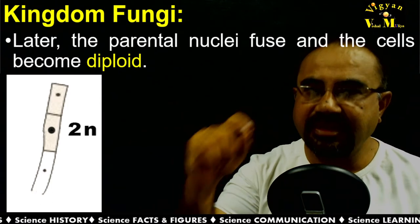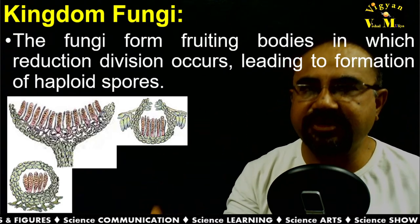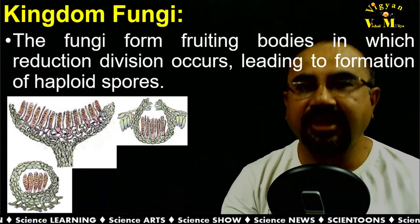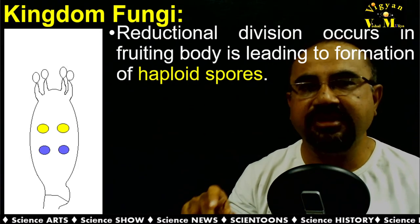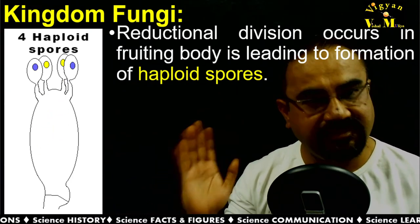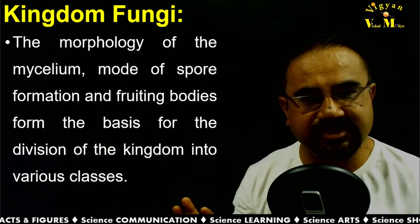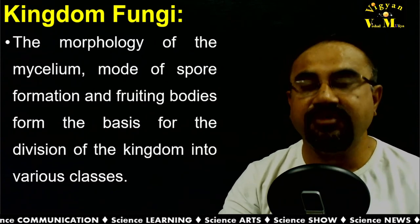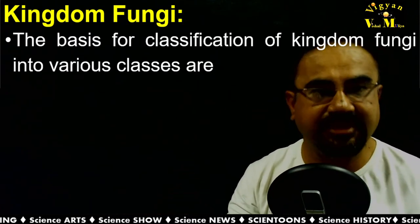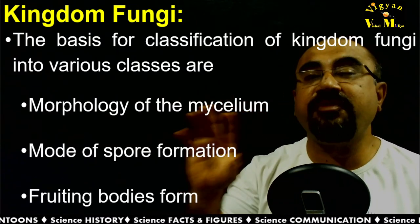When the diploid condition occurs, it undergoes reductional division. Fungi form different fruiting bodies, and inside these fruiting bodies the reductional division leads to the formation of haploid spores — either 4 or 8 haploid spores depending on their class. The morphology of mycelium, mode of spore formation, and form of the fruiting body are the basis of classification for the Fungi kingdom.